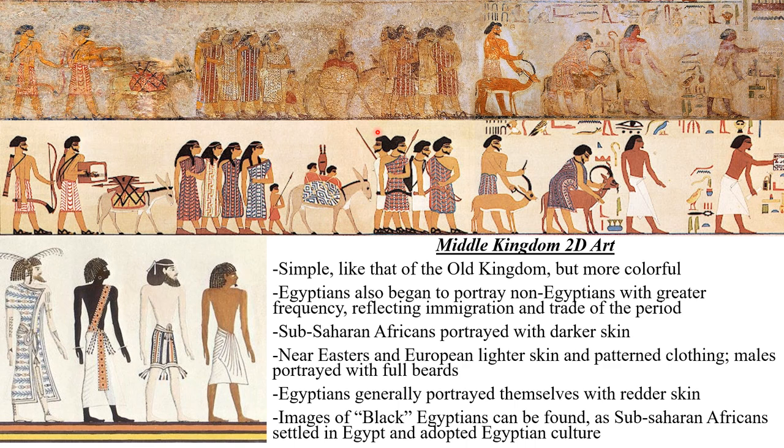There are images of Black Egyptians — Sub-Saharan African people dressed in Egyptian clothing as members of Egyptian society — as well as people of Near Eastern and possibly European descent portrayed in Egyptian garb, reflecting that Egypt was a multi-ethnic and even multi-racial society, and an important crossroads between Asia, Africa, and Europe.